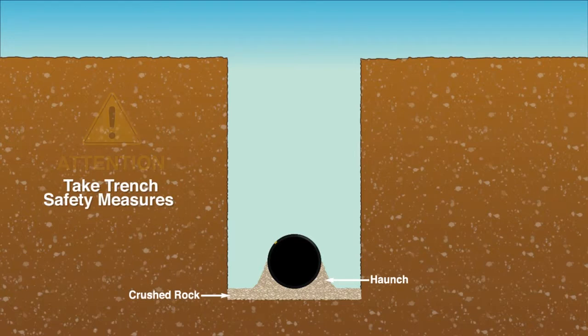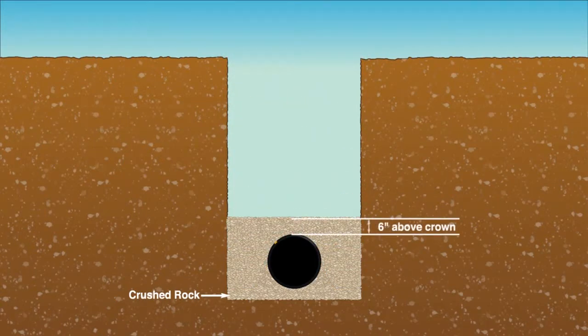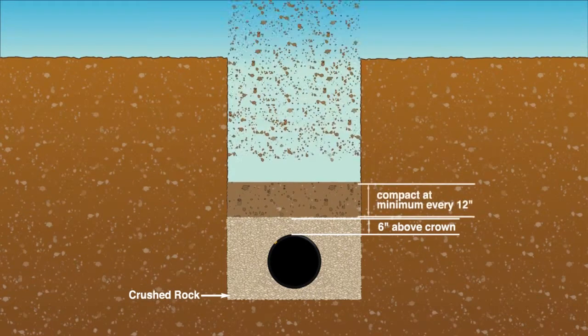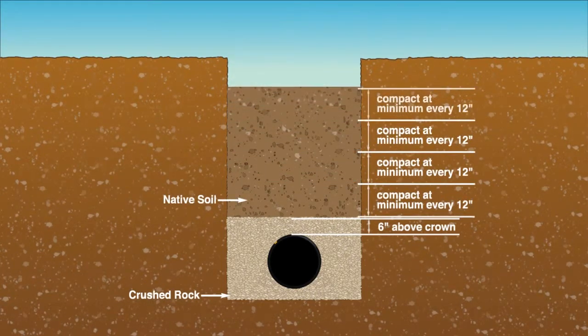Always make safety your number one concern in the trench, no matter the depth. Backfill the crushed rock or gravel bedding to a minimum of 6 inches above the top of the pipe. The remainder of the trench can be backfilled with native soils, compacted at a minimum of every 12 inches.